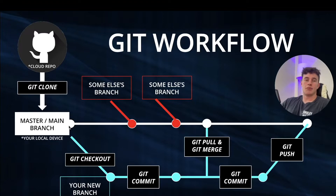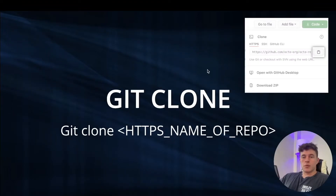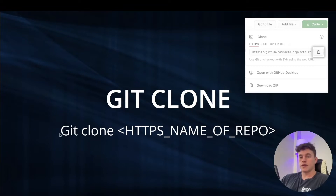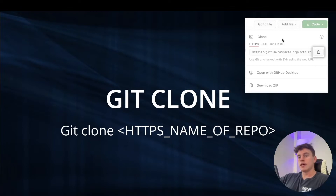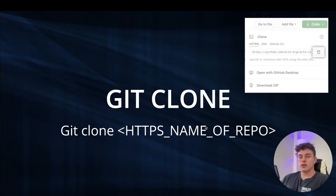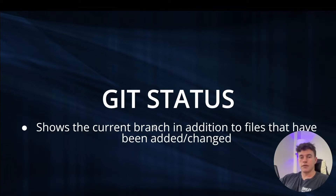A branch is often specific to a particular hotfix or feature — they can be any size, but it's a great way to keep tasks concise and ensure production code is never broken. The first command we talked about was git clone. You type git clone into your terminal after configuring Git on your local device, then append the HTTPS link to the repository from the cloud, press enter, and it pulls everything down into your current directory.